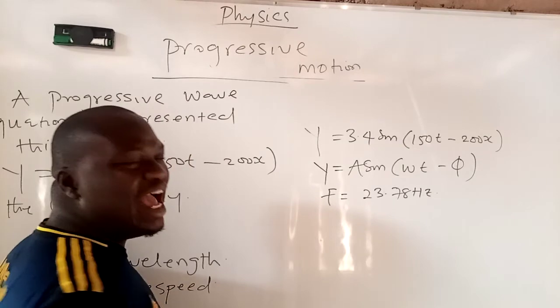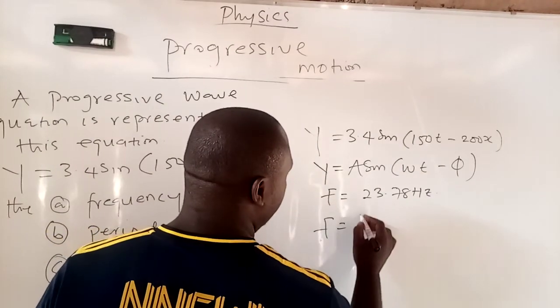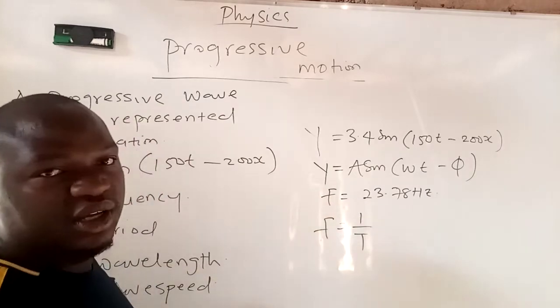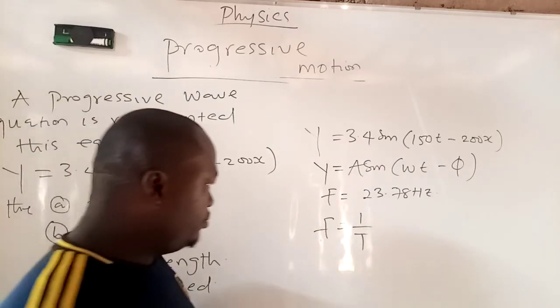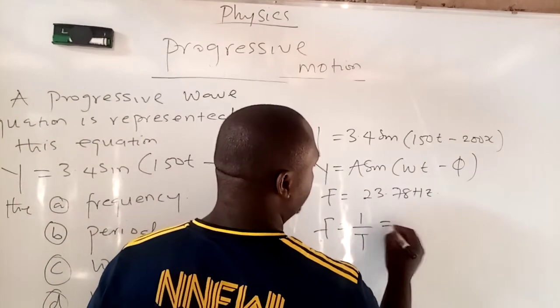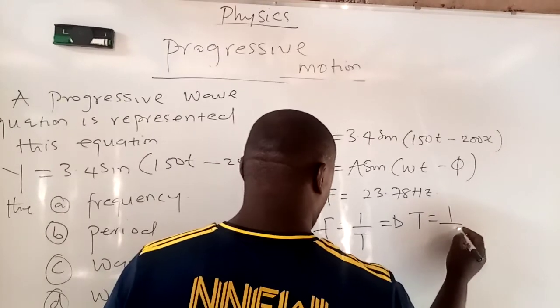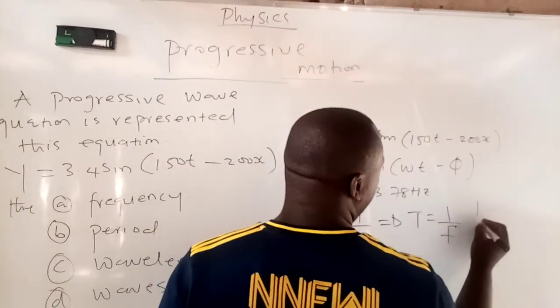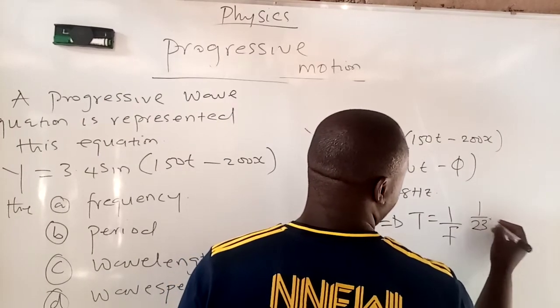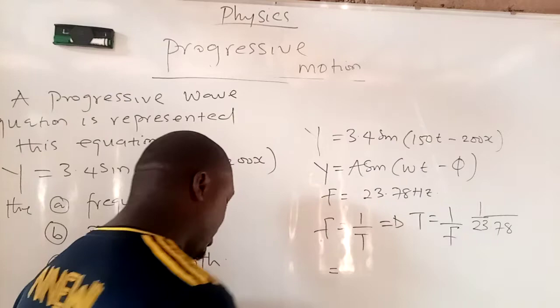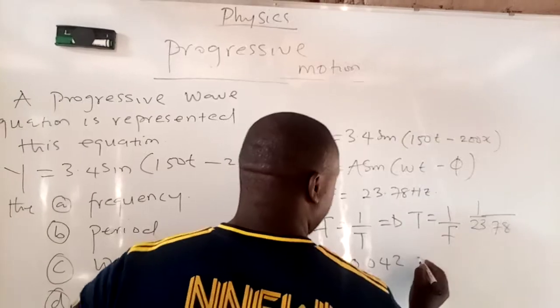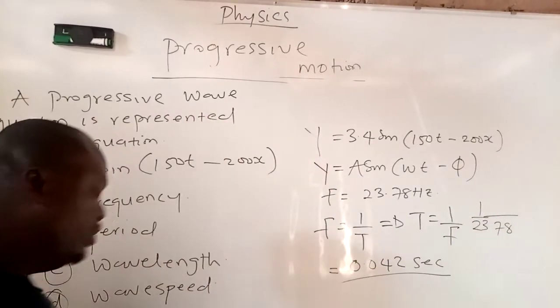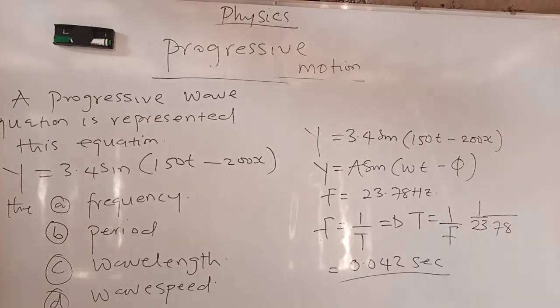They want to calculate the period. I want you to know something. Frequency is 1 over period. The SI unit of frequency is also S minus 1, because it's 1 over period. And they want to calculate period. So all you need to do, your period T is now 1 over frequency. So 1 divided by 23.78 would give you 0.042 seconds. The SI unit of time is seconds.